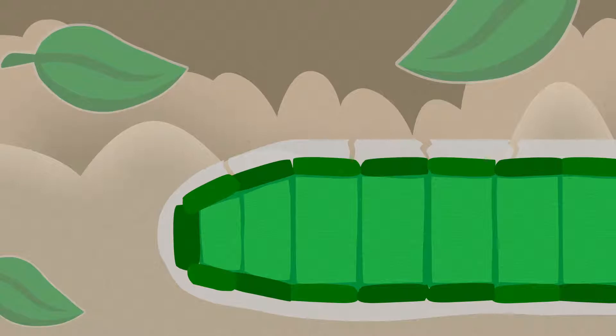Leaves are also covered by a waxy cuticle. This helps the leaf conserve water and repel dirt.